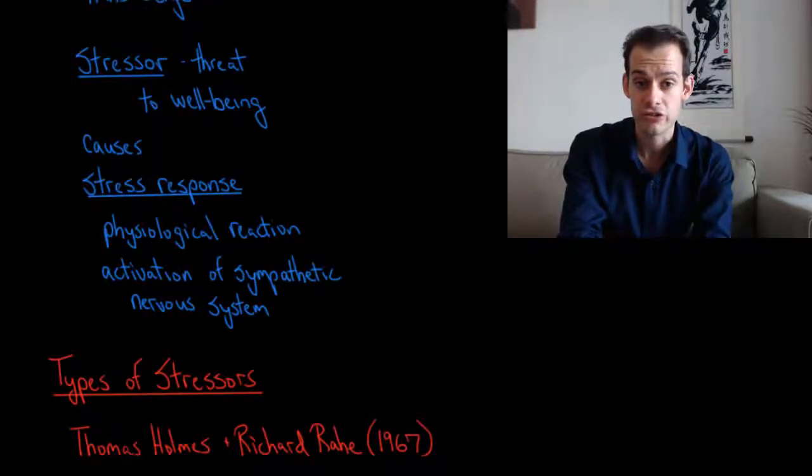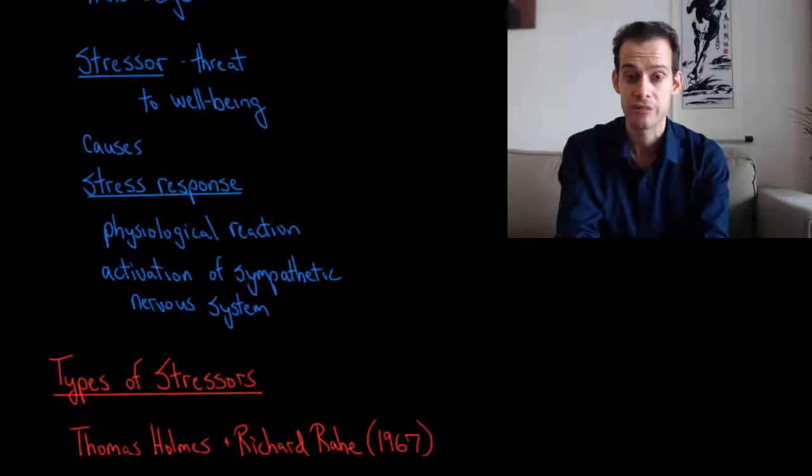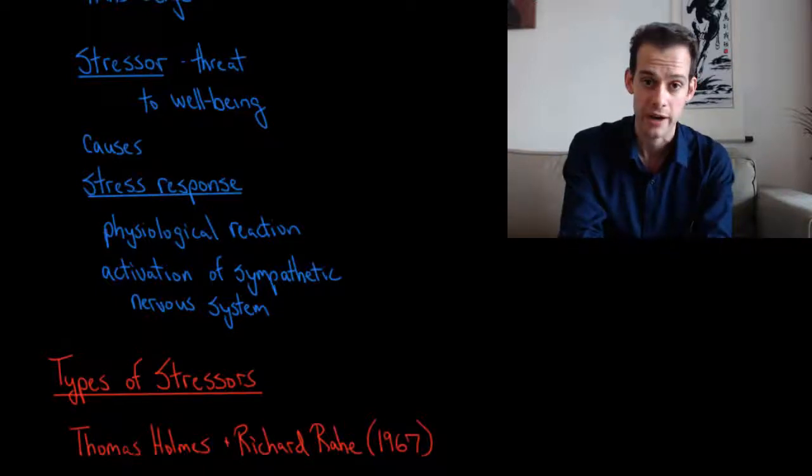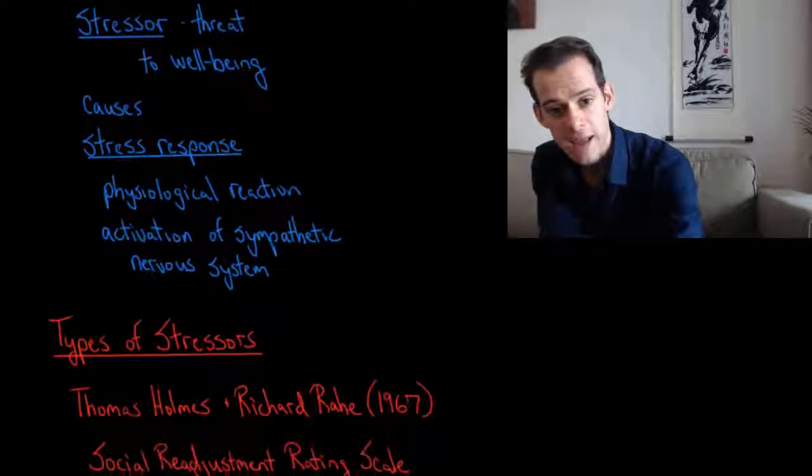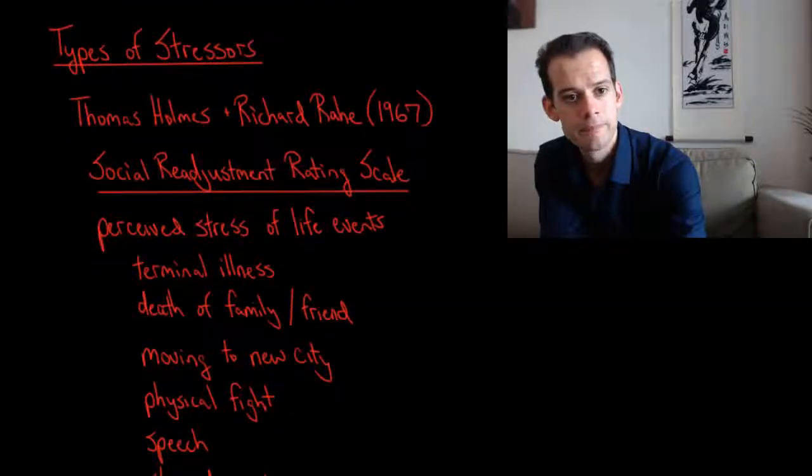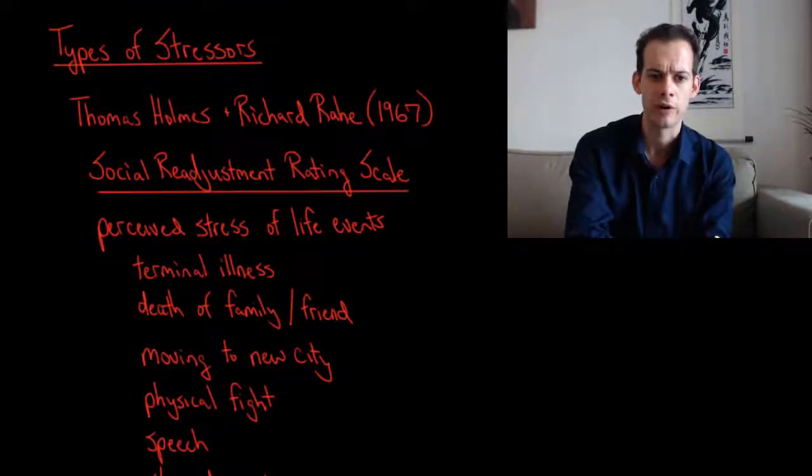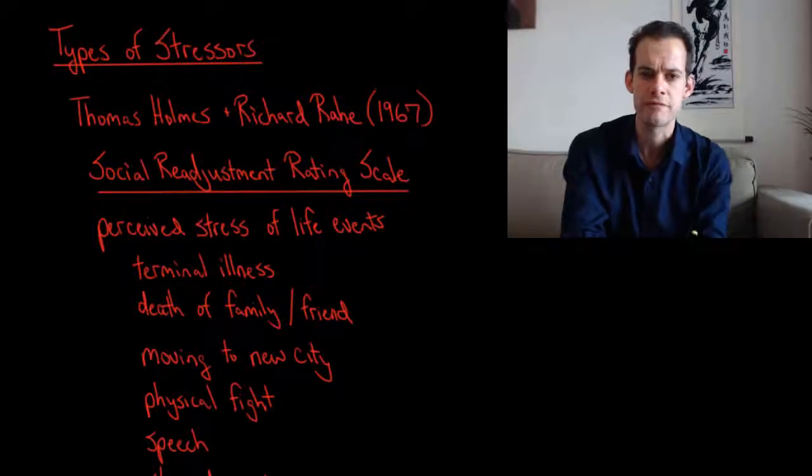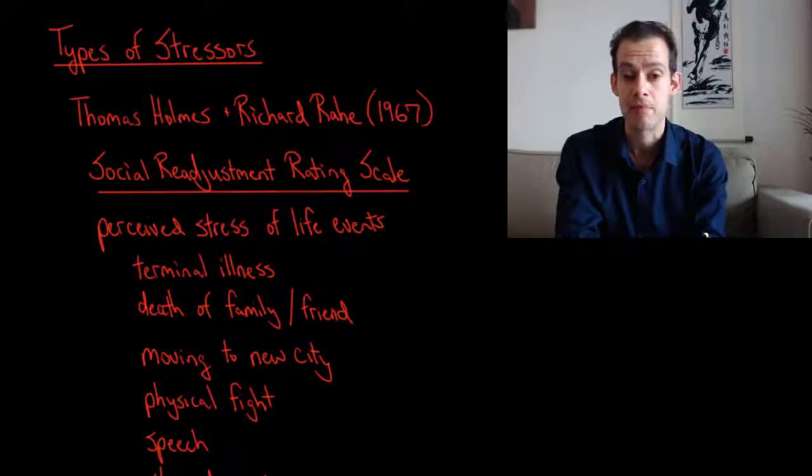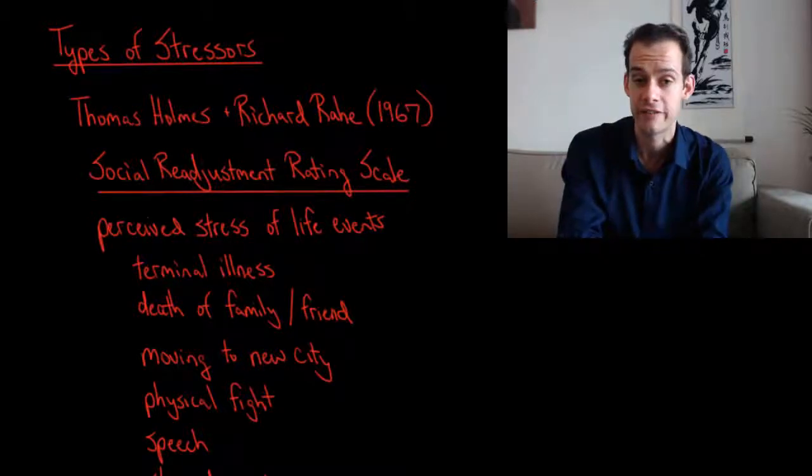Now if we think about stressors and the stress response we can think about whether there are different types of stressors. Different stressors might cause different stress responses in the body. So if we think about different types of stressors this brings us to work by Thomas Holmes and Richard Rahe. And what Holmes and Rahe worked on is called the Social Readjustment Rating Scale. And this is a way of trying to categorize the perceived stress of different life events.